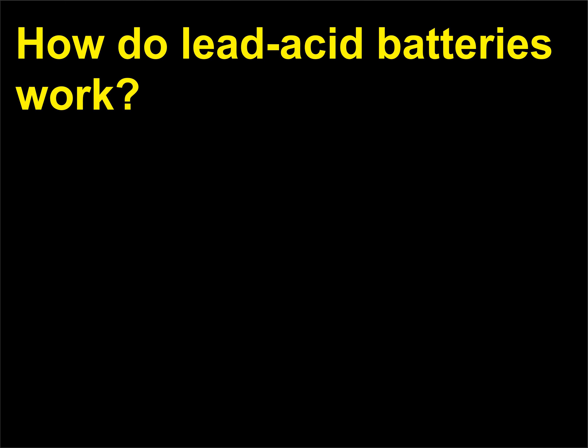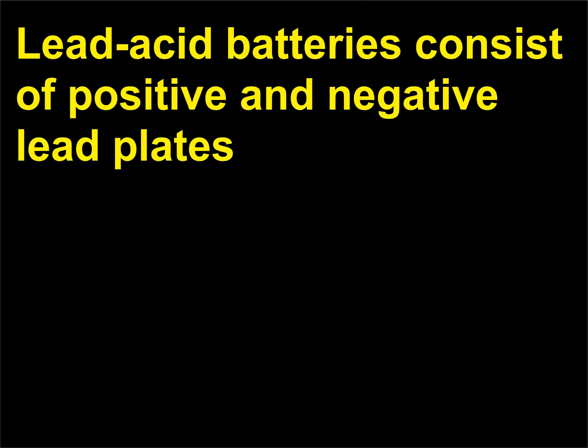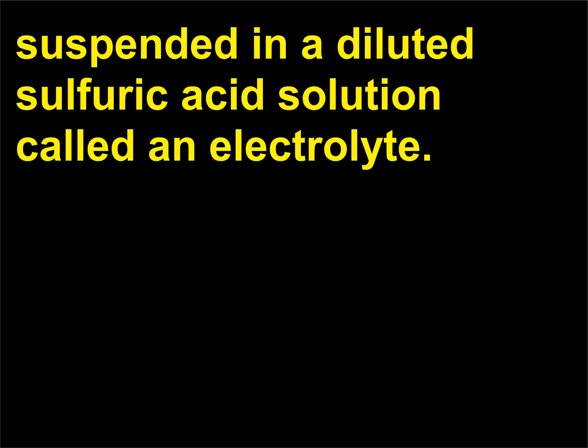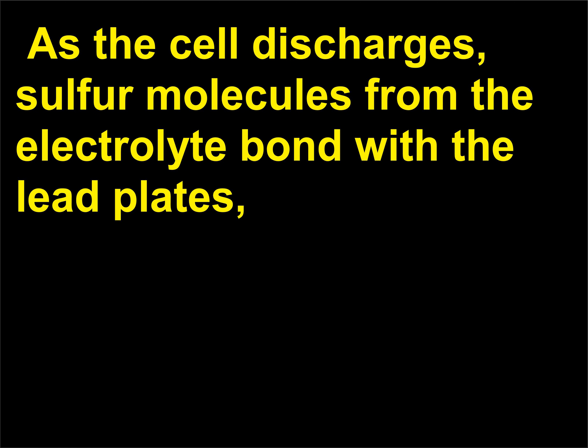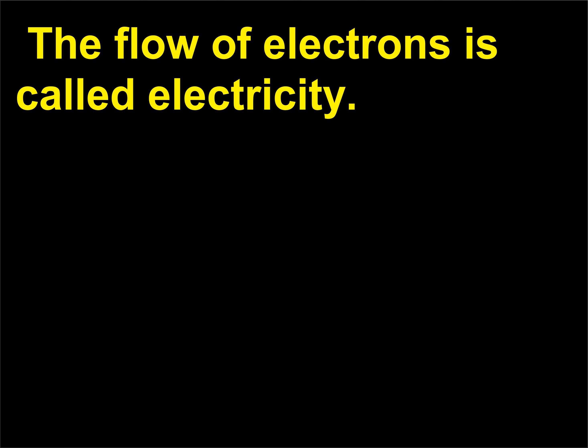How do lead-acid batteries work? Lead-acid batteries consist of positive and negative lead plates suspended in a diluted sulfuric acid solution called an electrolyte. Everything is contained in a chemically and electrically inert case. As the cell discharges, sulfur molecules from the electrolyte bond with the lead plates, releasing excess electrons. The flow of electrons is called electricity.